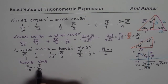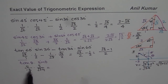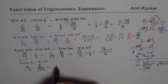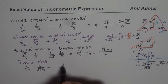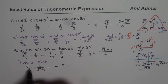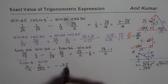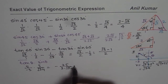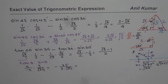Sin θ is opposite over hypotenuse, which is 5 over square root of 34. So the expression tan θ times sin θ becomes (−5 over 3) times (5 over square root of 34), which equals −25 over 3 times square root of 34.